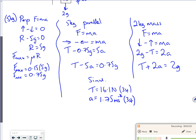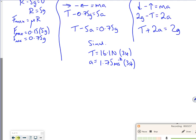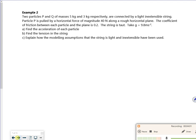That's nice isn't it? How nice is that? Do I stop there or should I keep on going with example 2? I think I'll do an example 2. So example 2 says 2 particles P and Q masses 5 and 3 connected by a light inextensible string. Particle P is pulled by a horizontal force of magnitude 40 newtons. Along the rough plane, coefficient of friction is 0.2. So the string is taut, and then you've gone.